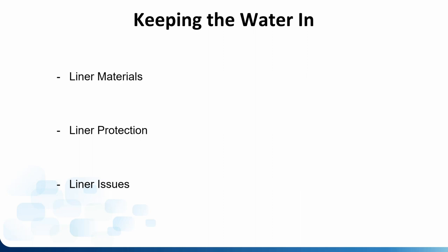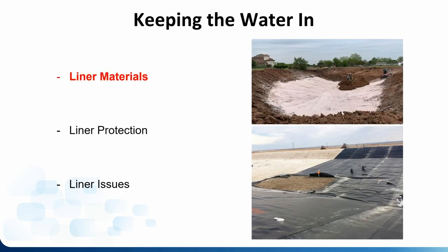Keeping the water in: let's talk about liner materials, liner protection, and liner issues. The most common liner we see is a clay or bentonite liner, because most lagoons were built this way in the 70s, 80s, and 90s. What they do is compact the soil, bring in lots of clay which absorbs water and creates a seal, then put 18 inches to two feet — sometimes three feet — of clay down and compact it to engineering standards. It seals pretty well, though it's not perfect — there's room for human error, like accidentally poking rebar through it creating leak paths.